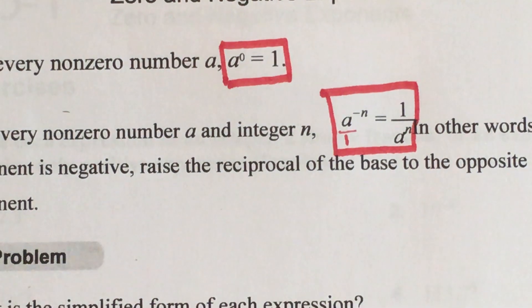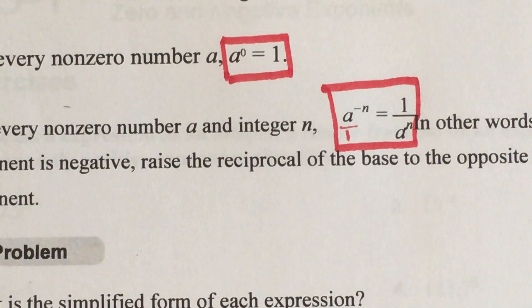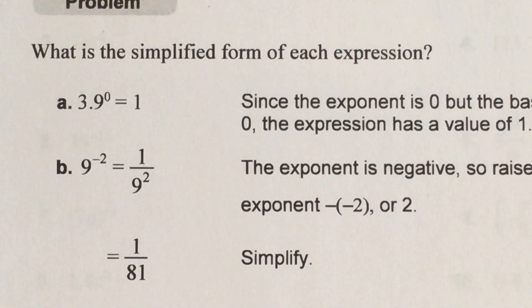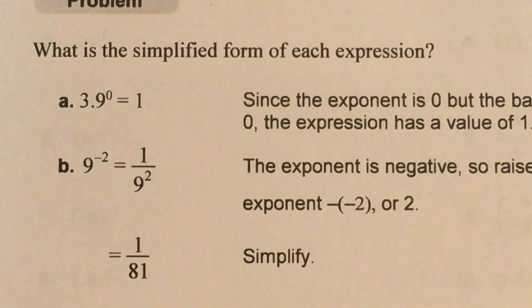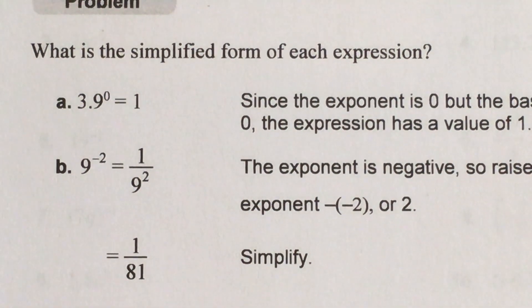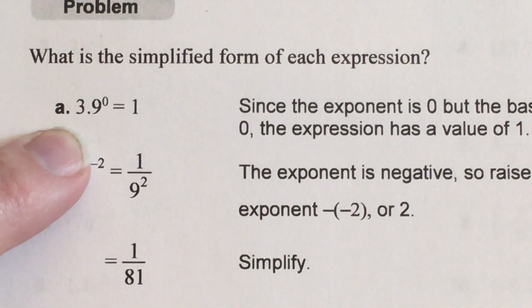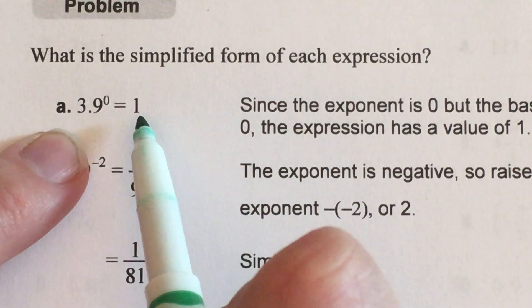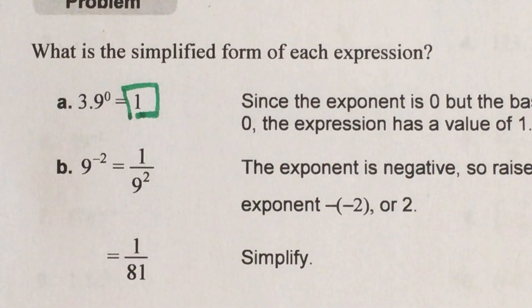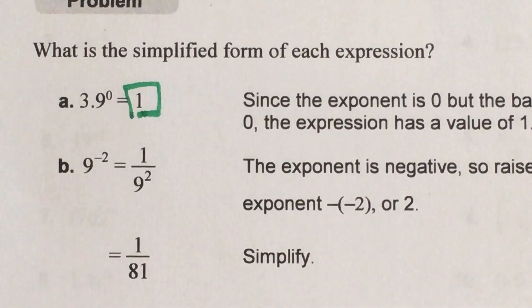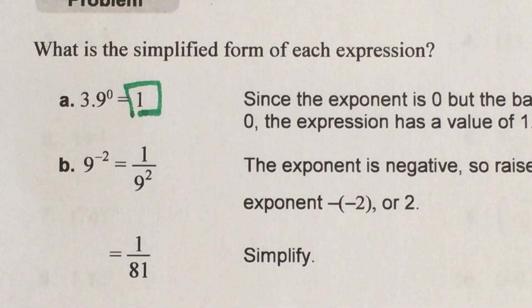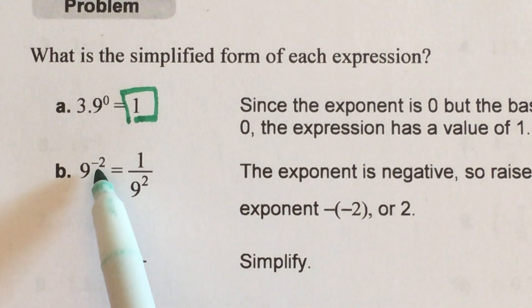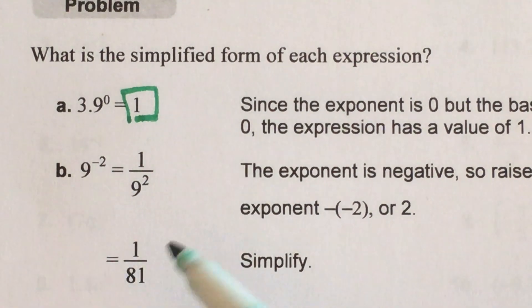Let's look at a couple of word problem examples. Problem a: 3.9 to the zero power. That is equal to one. That's it, you're done. There's nothing else to do because anything to the zero power is equal to one.